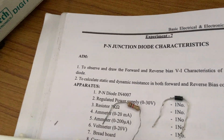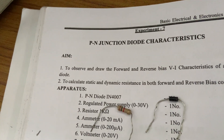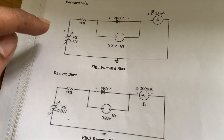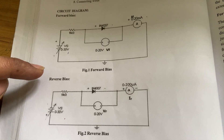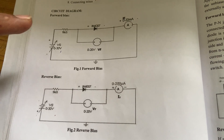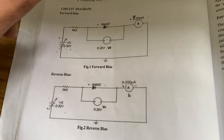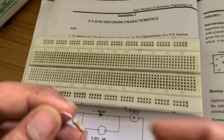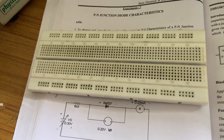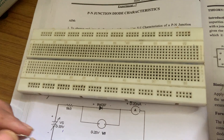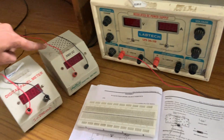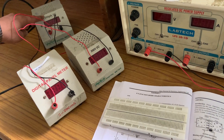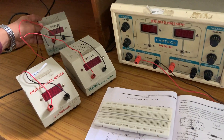Today we are going to discuss the PN junction diode voltage-current characteristics. The circuit shown is for forward bias and reverse bias, and we are going to observe the V-I characteristics of both. The components required are a breadboard, one kilohm resistance, a PN junction diode, RPS, voltmeter, milliammeter, and microammeter.